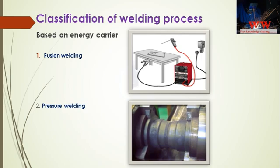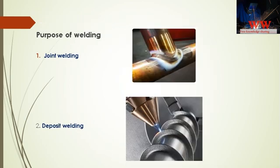A further classification can be made by the purpose of welding: joint welding, where two or more members are joined — for example, pipeline welding and structural welding — and deposit welding, where weld metal is deposited on one member only — for example, hard facing, cladding, buttering, and surfacing applications.